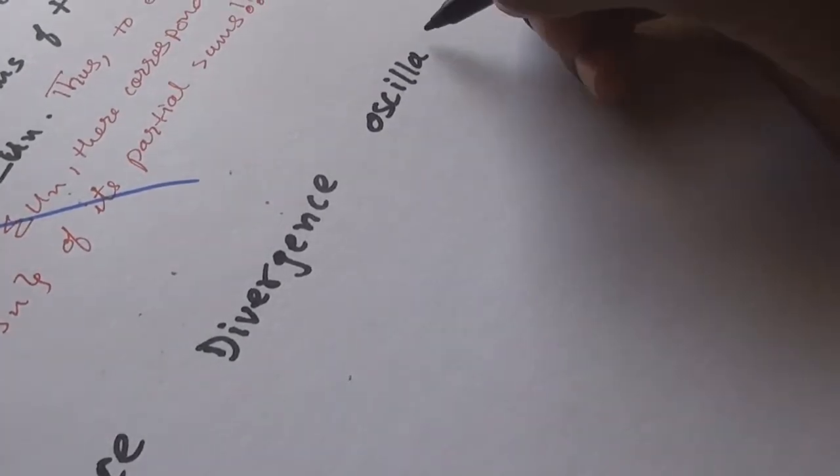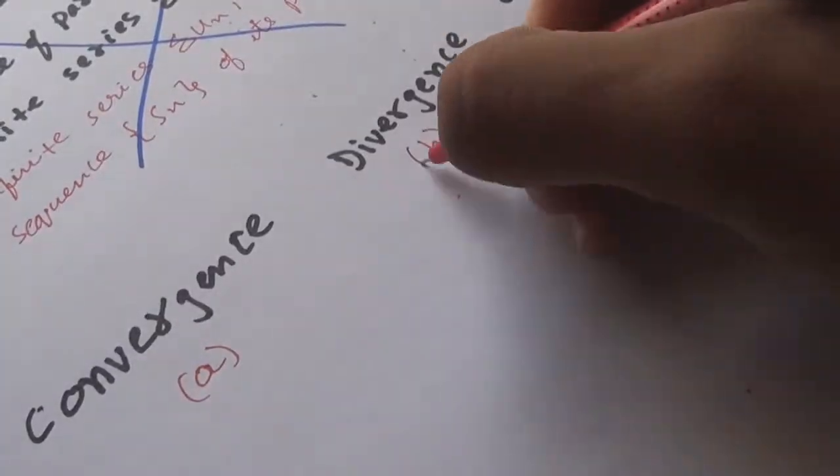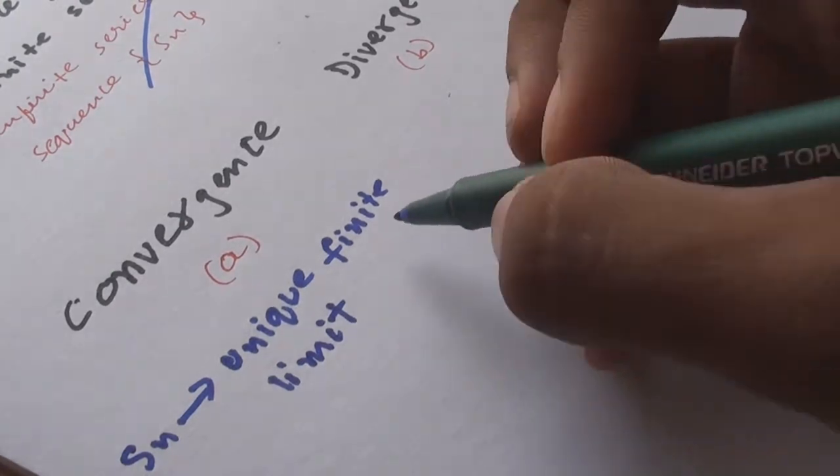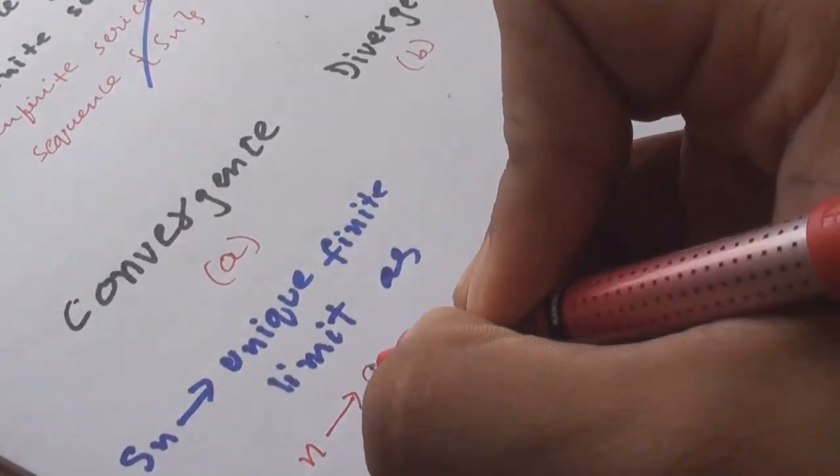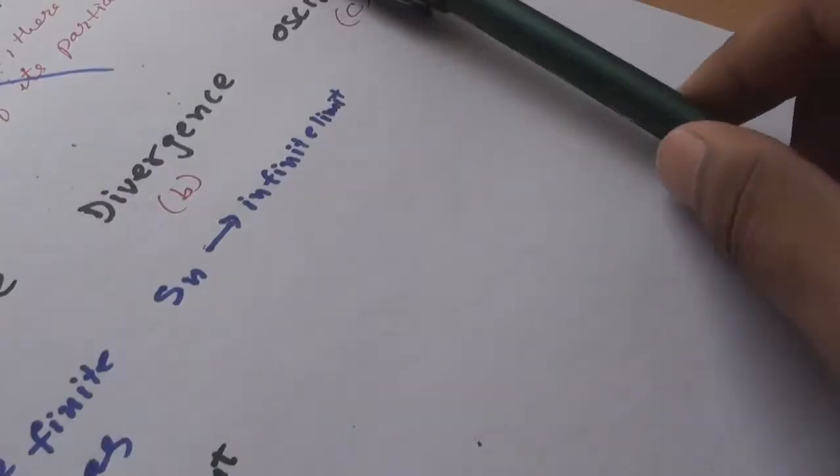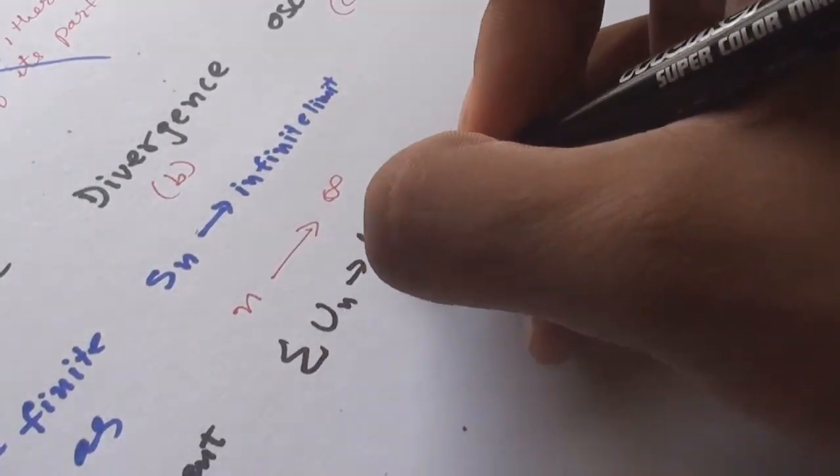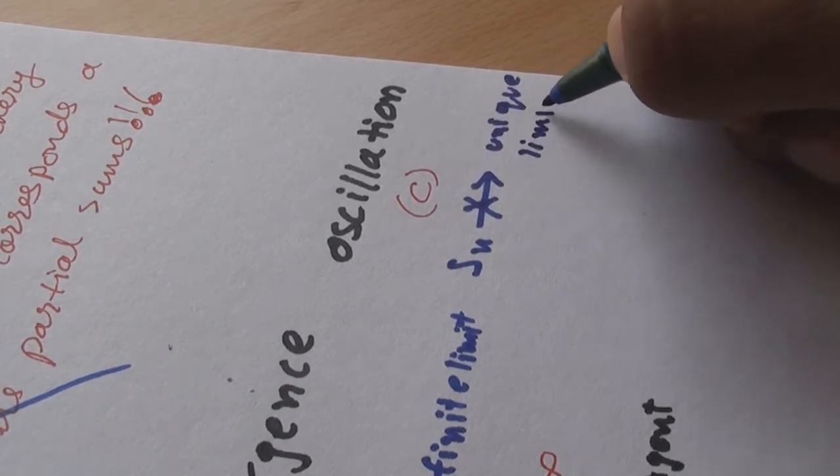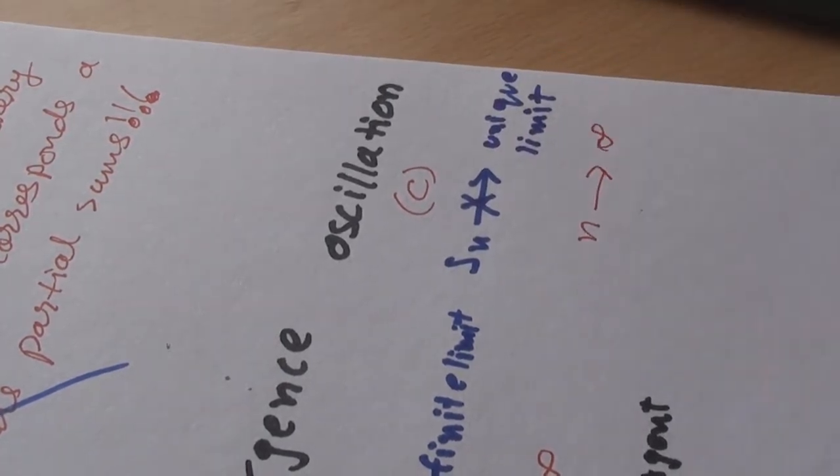Our area of concern is to find the convergence, divergence or oscillations of a series. Your ABCs of the chapter: A. If Sn tends to a unique finite limit as n tends to infinity, then un is said to be convergent. B. If Sn tends to an infinite limit as n tends to infinity, then un is said to be divergent. And C. If Sn does not tend to a unique limit, finite or infinite, as n tends to infinity, then un is said to be oscillatory.